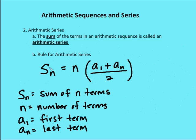So once again, the rule for arithmetic series, the sum of n terms is equal to the number of terms really times the average value of each term.